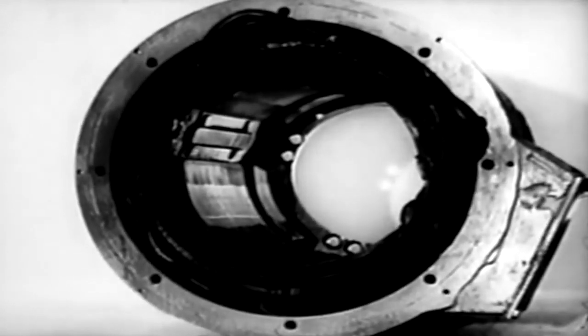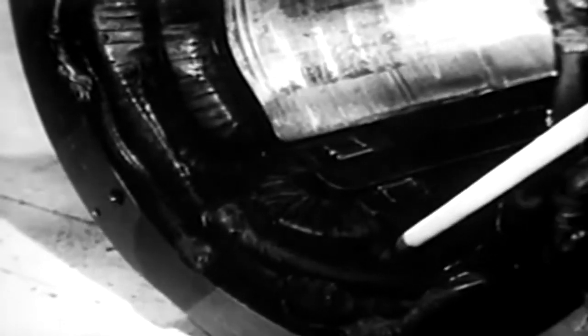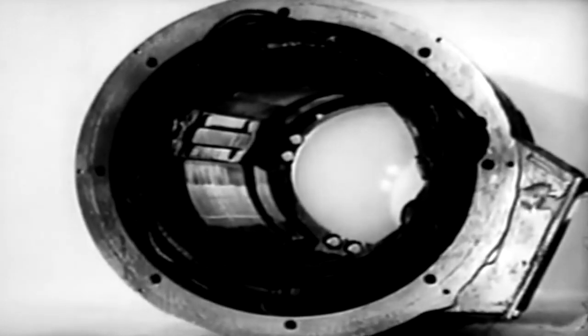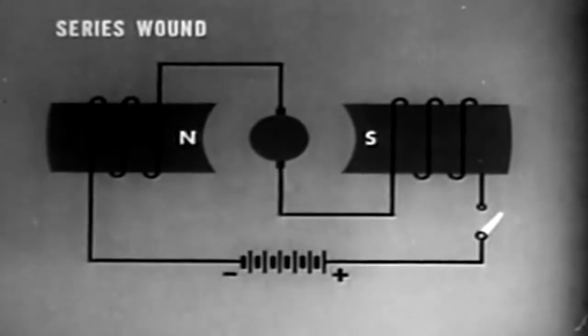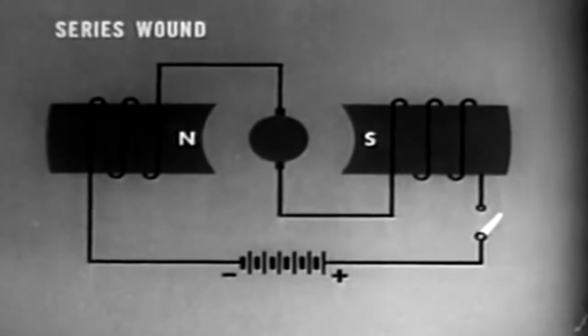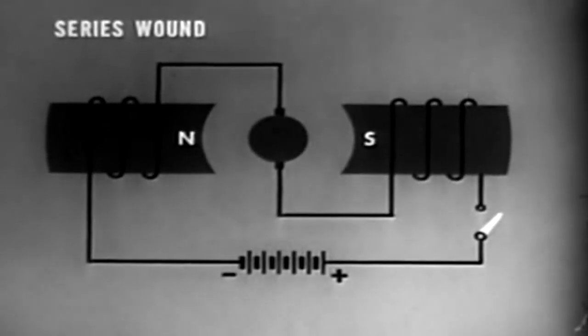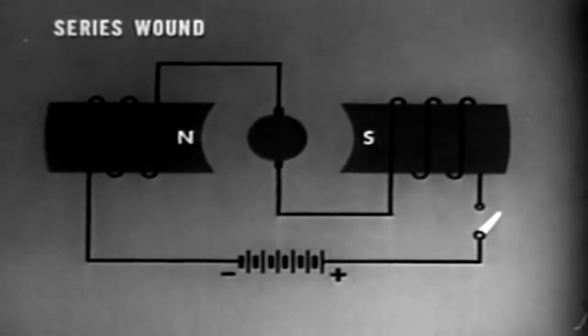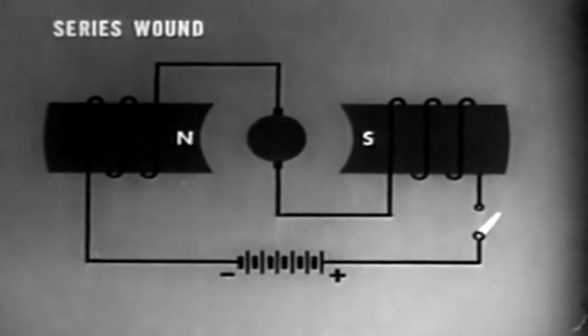Just as in DC generators, DC motors seldom use permanent magnets for the field — instead, electromagnets are used. Like with a DC generator, field windings are constructed in several ways, each type with special characteristics and specific uses. The series wound motor has good starting torque or turning force. Torque depends on armature current and on field strength. Since field strength is proportional to current, the high starting current before CEMF is developed affects torque as the square of the current.